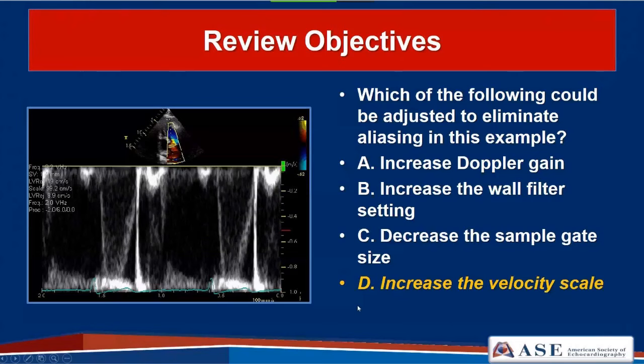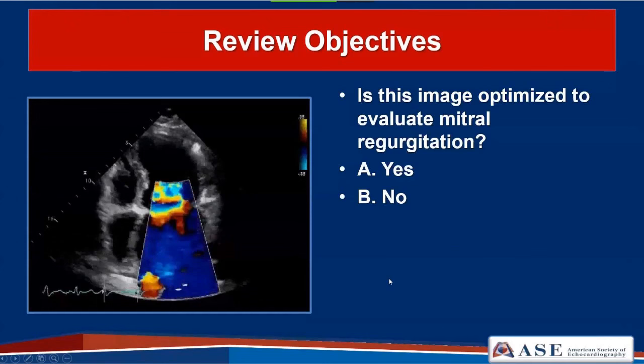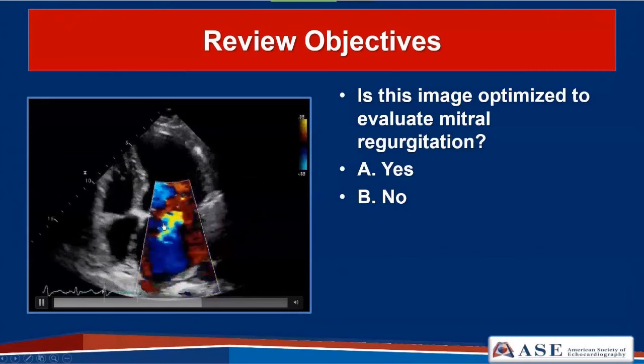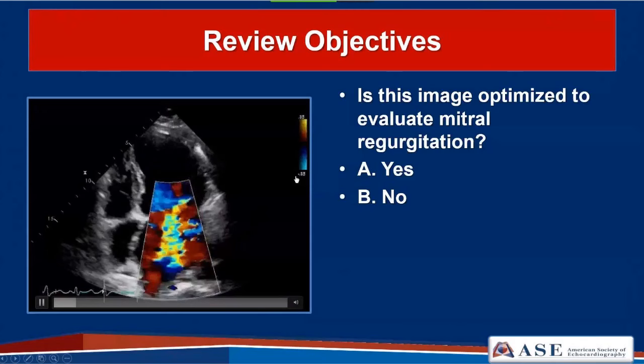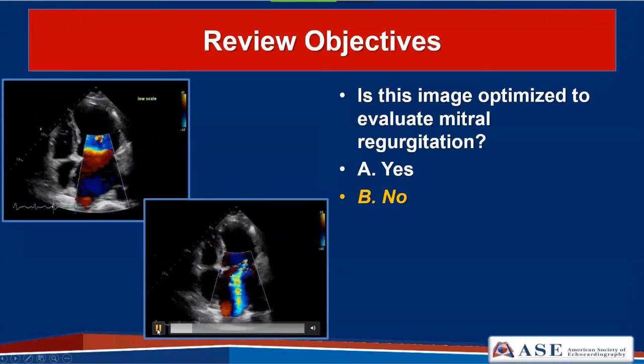Next review question: is this image optimized to evaluate mitral regurgitation? Looking at the large jet and the scale set at 0.35—that's too low—so this image is not optimized. When we adjust the scale to 0.62, we now have adequate depiction of the mitral regurgitation and have optimized our image.